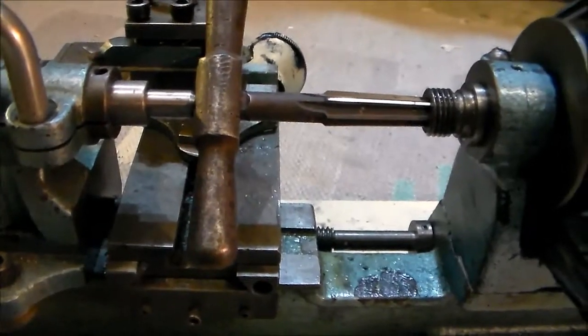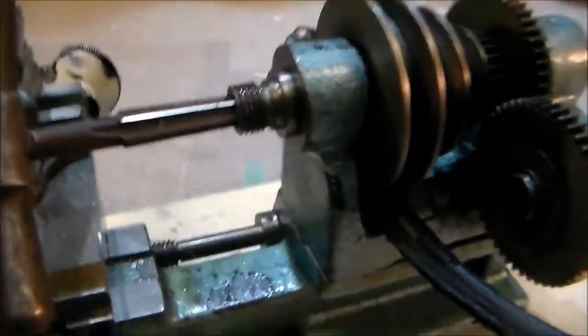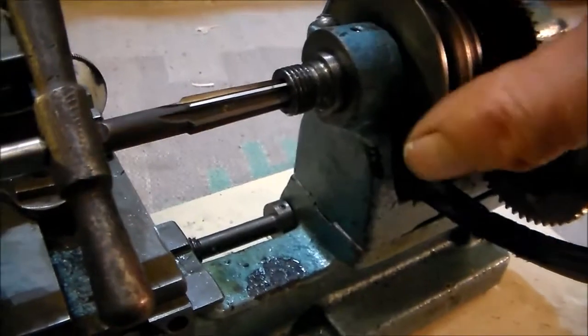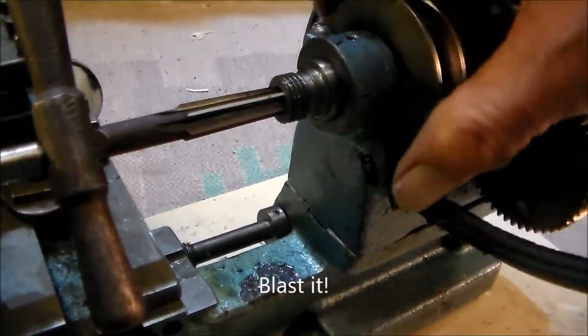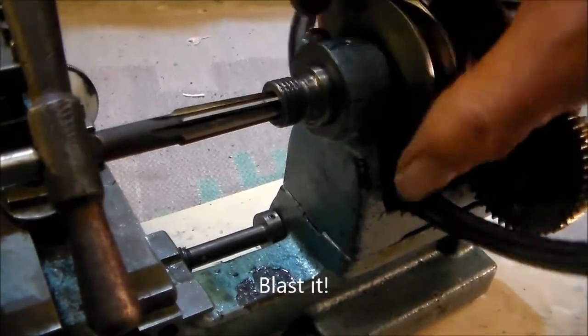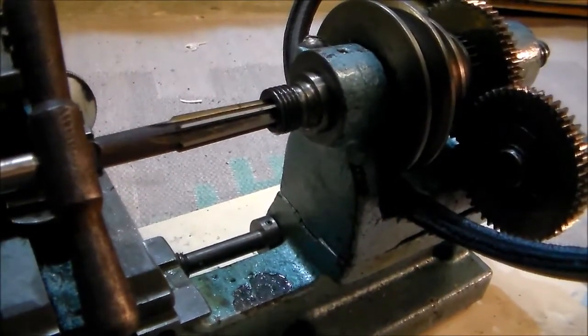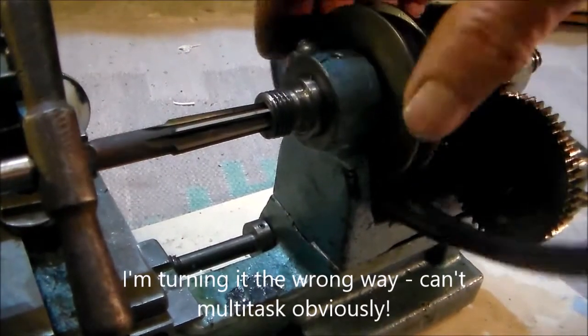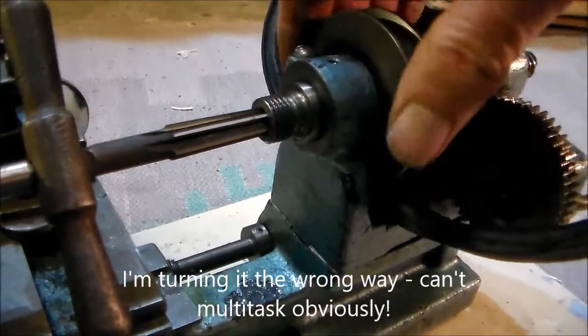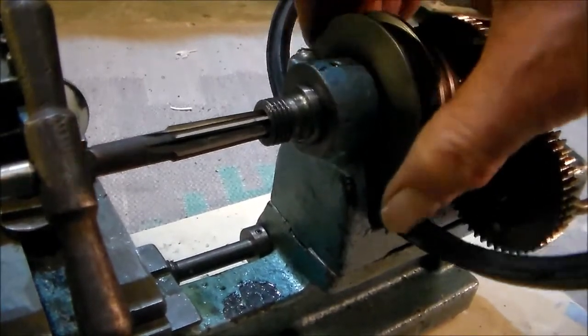And then what I can do is just turn, because the handle will stop the reamer turning. Just turn this by hand and maybe just give a little bit more pressure on that, and turn that by hand again. That's turning nicely on the reamer.